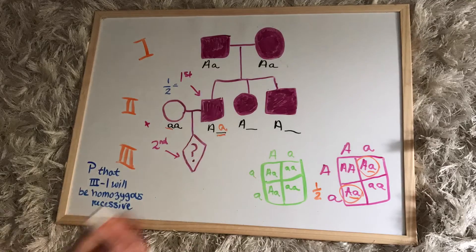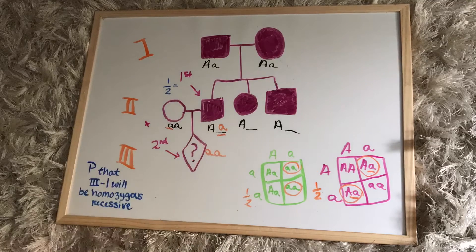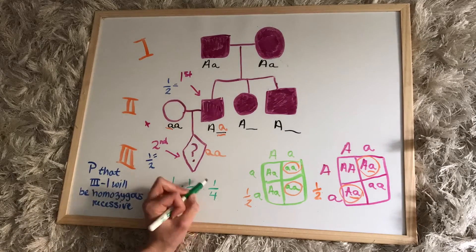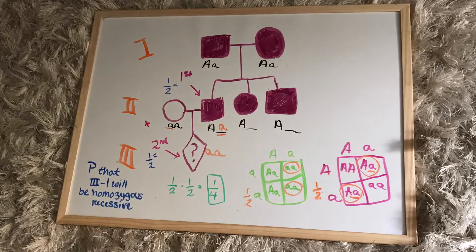And then we'll do our second Punnett square with the heterozygous father and the homozygous recessive mother. With this, again we see that the probability that the child is homozygous recessive is one-half. And with that, we can multiply the two one-halves together to get an answer of one-fourth.